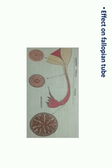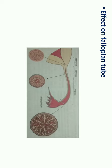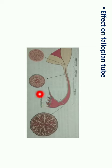Regarding the effect on the fallopian tube, estrogen increases the number and size of epithelial cells present on the mucosal lining of the fallopian tube. It also increases cilia movement and enhances the proliferation of glandular tissue in the fallopian tube. The fallopian tube has a fimbriated end, an infundibular part which lies in close contact with the ovary, the ampulla, the isthmus, and the interstitial part.